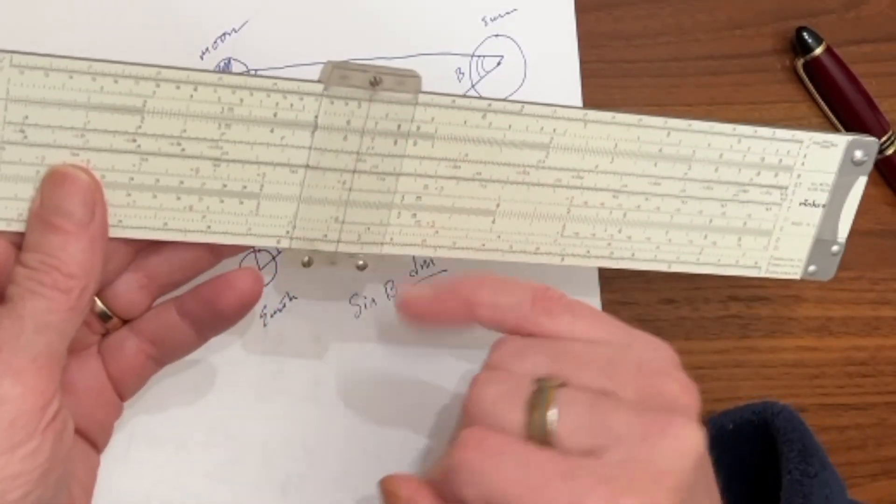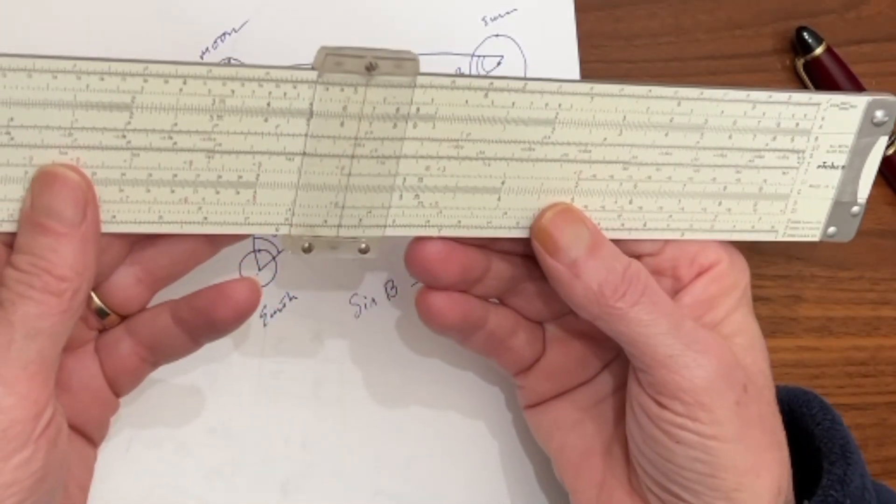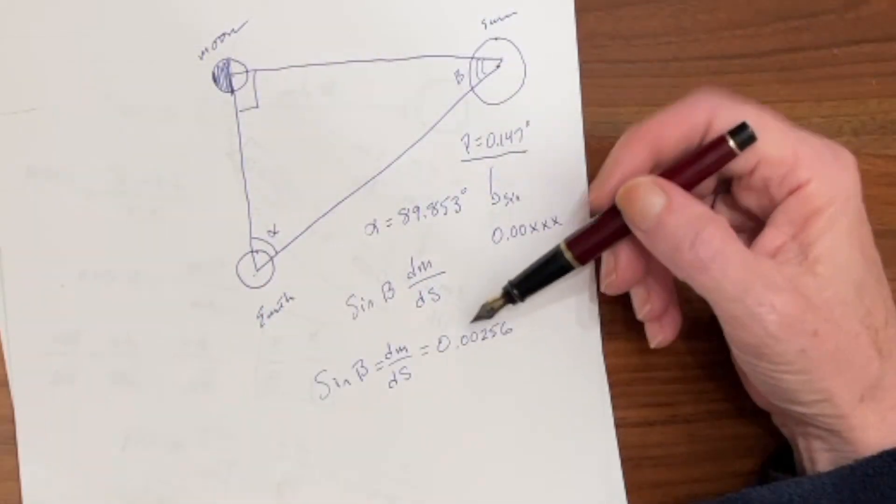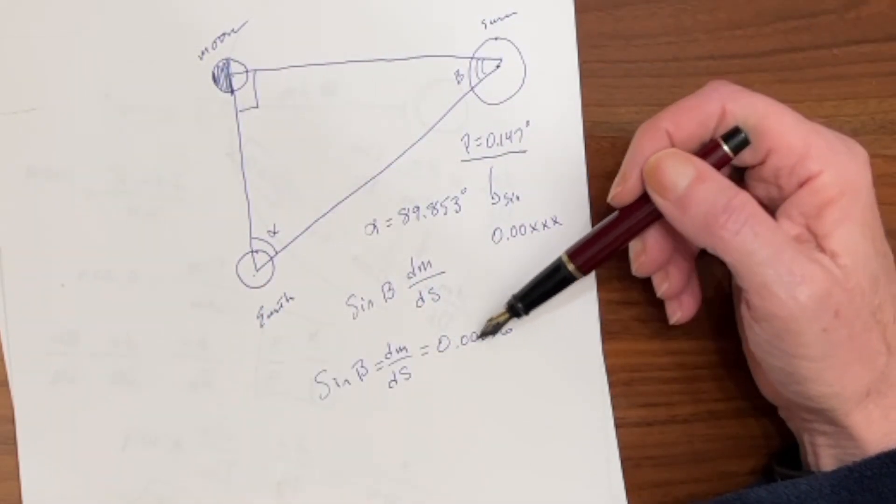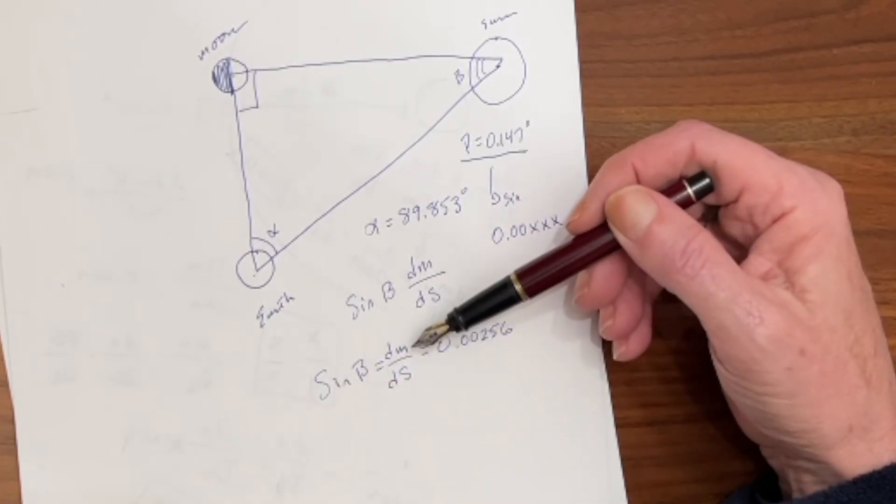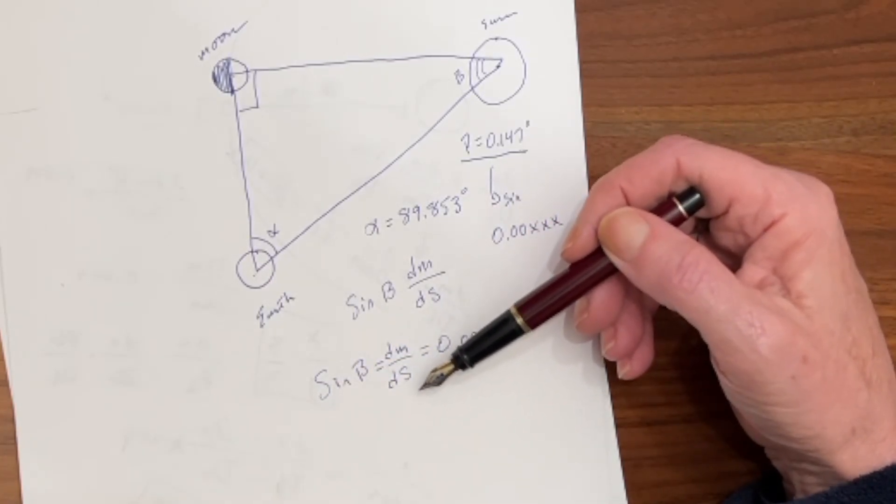Now, if we read straight down, we see that that is 2.56. So what we have is 0.00256 equals sine beta, which is the distance to the moon over the distance to the sun.